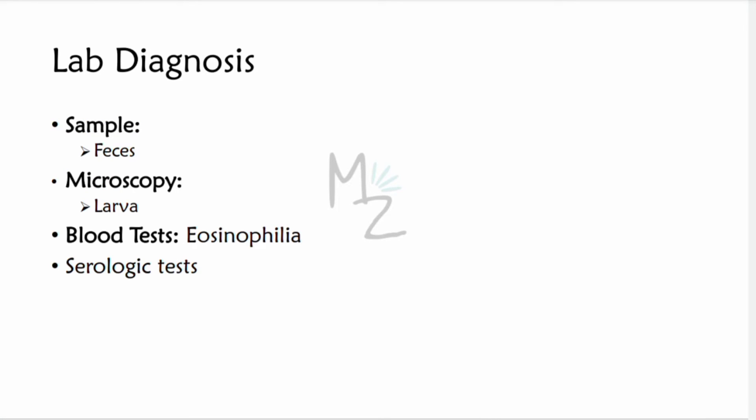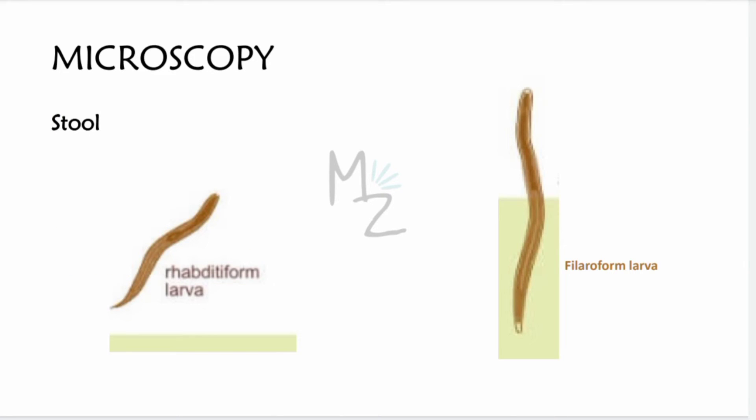Lab diagnosis: a fecal sample is needed. Diagnosis depends on finding the rhabditiform larvae — rather than eggs — in the stool. As with many nematode infections in which larvae migrate through tissue, eosinophilia can be striking. Serologic tests are useful when larvae are not visualized. In the image, you can see both rhabditiform larvae and filariform larvae.